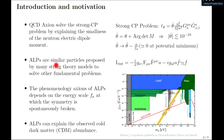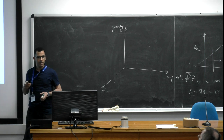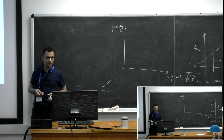Axion-like particles are similar to the QCD axion, introduced to solve other fundamental problems using the same Peccei-Quinn method. They share the same phenomenology with the QCD axion, determined by the high energy scale at which the symmetry is spontaneously broken. Because of this high energy scale, all their interactions with standard model particles are suppressed, and they can form the total abundance of dark matter, making them very suitable dark matter candidates.